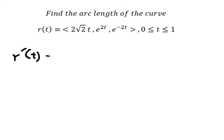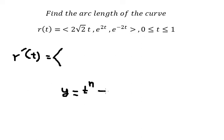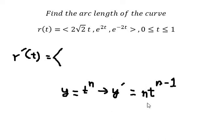We can use the power rule. We have y equals t to the power of n. If we take the derivative of this, we have n times t to the power of n minus one. So for t to the power of one, we put one in here — t to the power of zero gives number one — so we just have only the number.